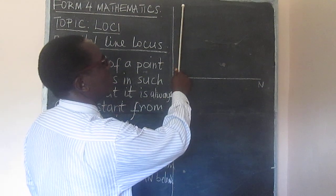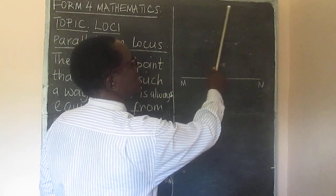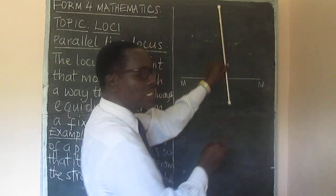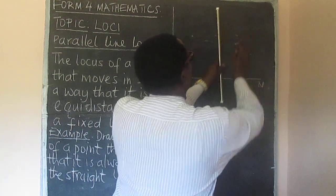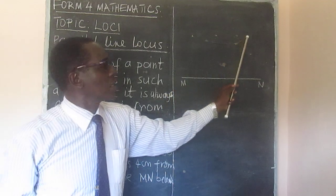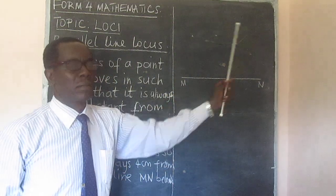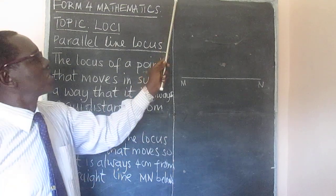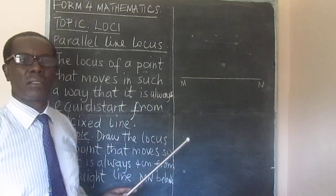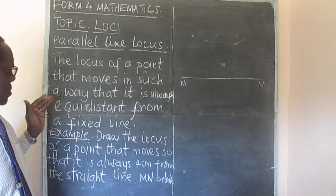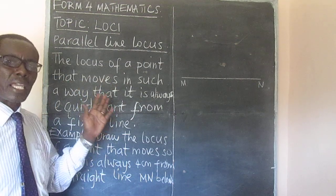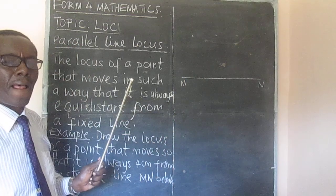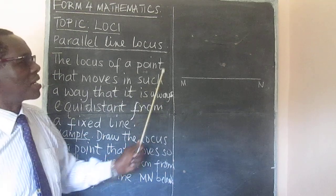Think about it this way. If this was the edge of the wall and you are moving such that you are a fixed distance from the wall, the points, if joined together, would make a straight line. And that straight line will be parallel to the wall. So, a point that moves in such a way that it is always equidistant from a given line will trace out another line parallel to the given line.